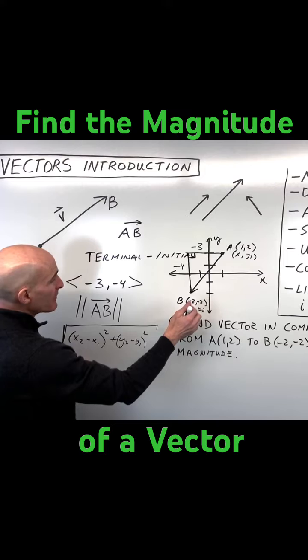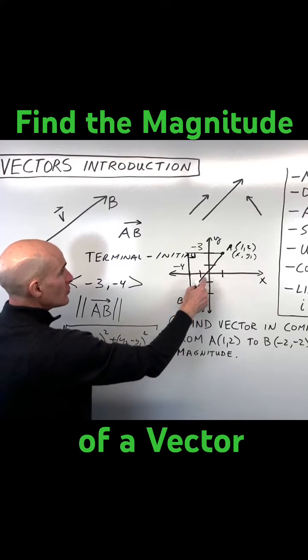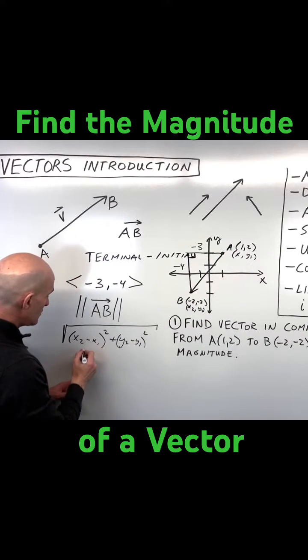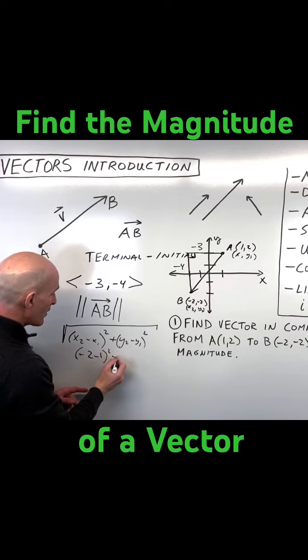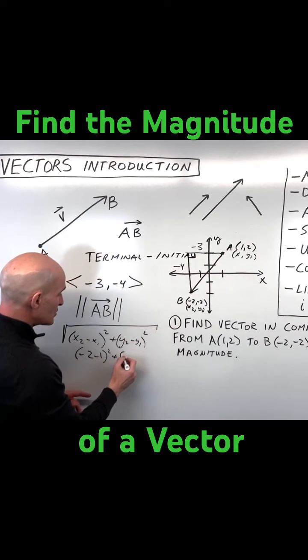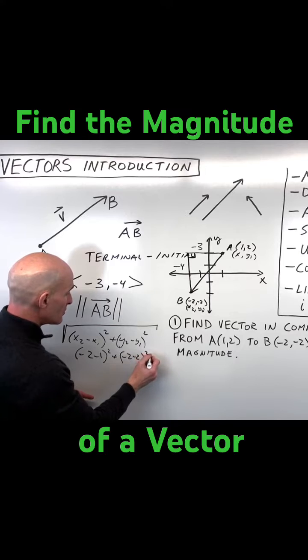So if we do this here, let's just practice. We've got negative 2 minus 1 squared plus negative 2 minus 2 squared.